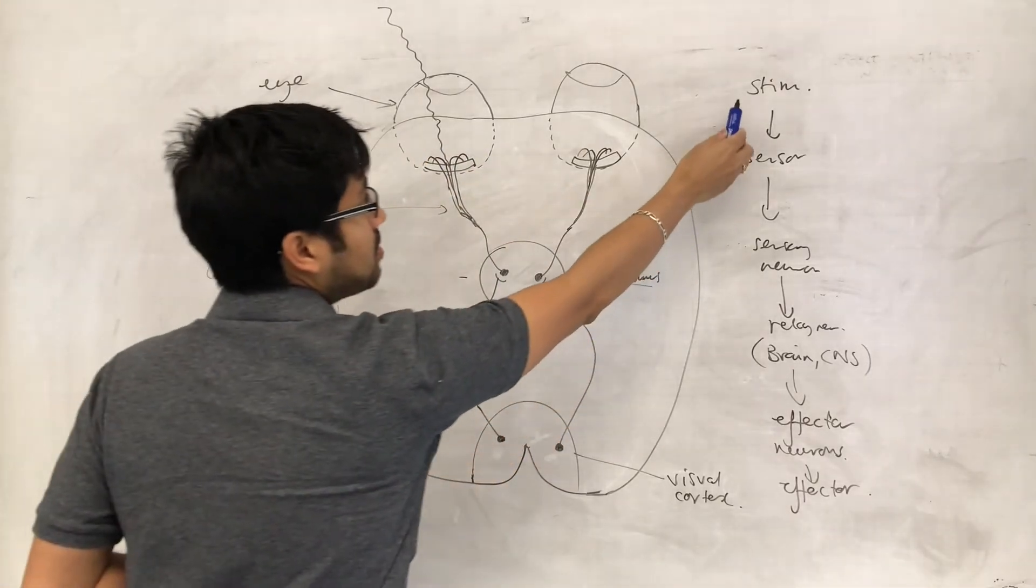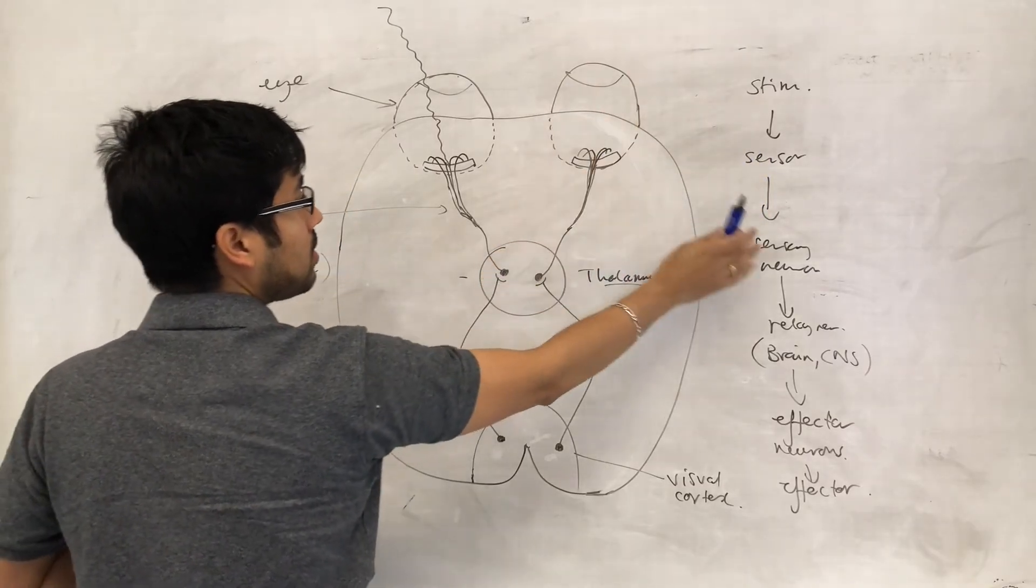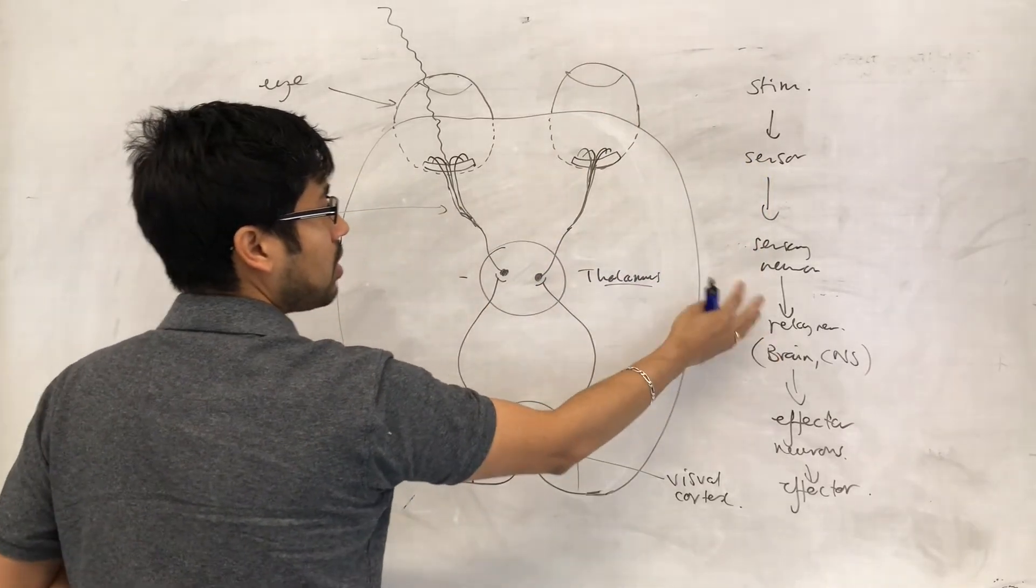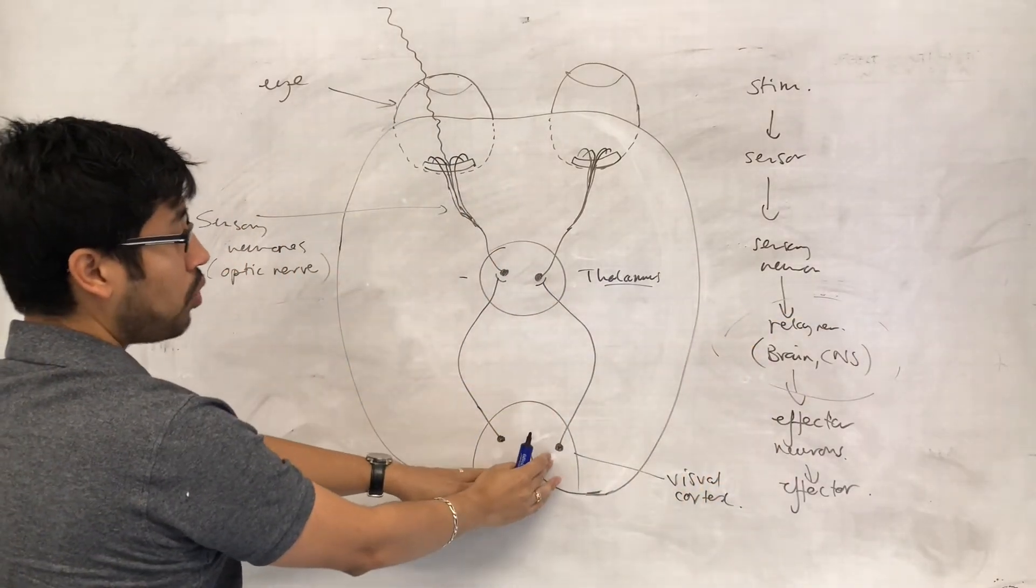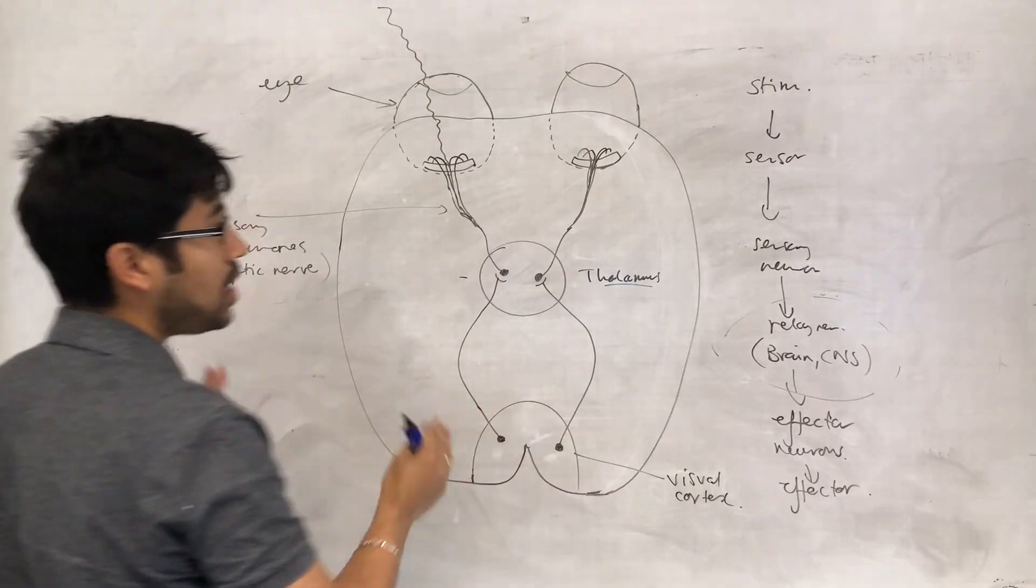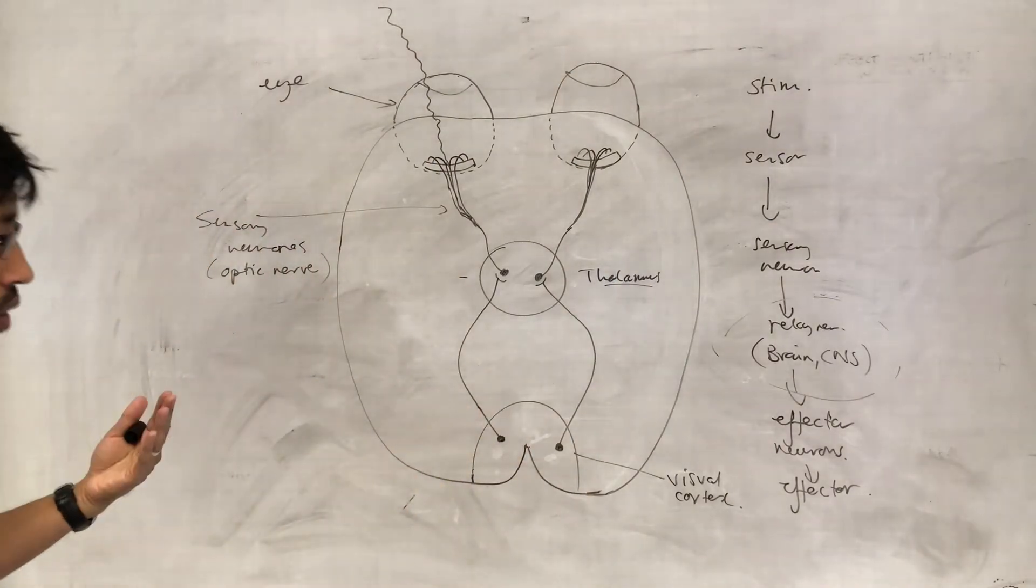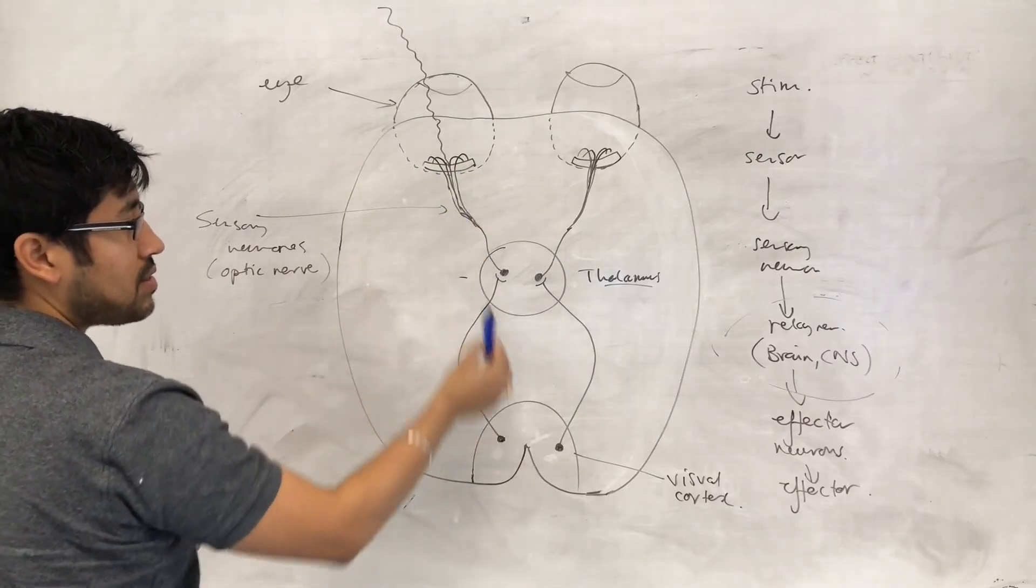Okay, so I hope we understand this: stimulus, sensor, the eye, sensory neuron, optic nerve, and then it goes to the brain, the visual cortex of the brain, in order for processing. Now, the next section is going to involve looking at how this system develops.